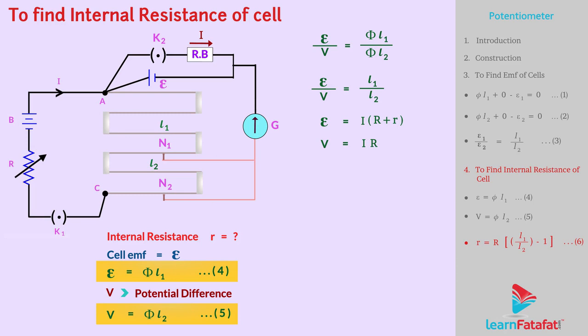We know that ε = i(R + r) and V = iR. Hence, above expression becomes i(R + r)/(iR) = L₁/L₂. Therefore, r = R(L₁/L₂ - 1). Let's label this as equation number 6.